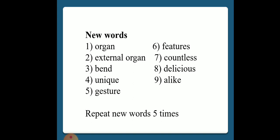Organ means a part of the body that is used for a particular purpose. External organ means an organ that is on the outside of our body. Bend means to change the position of our body.